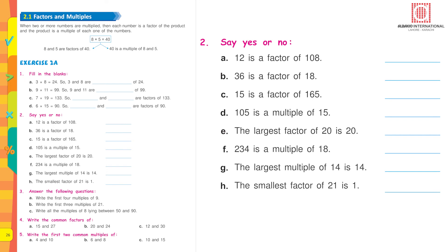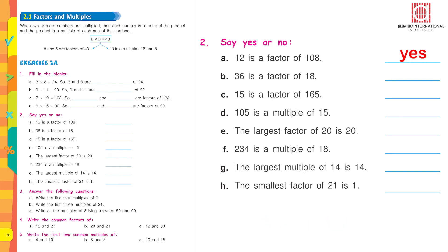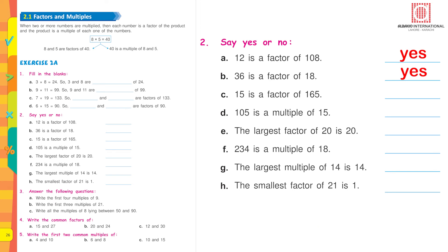Question 2 — say yes or no. Is 12 a factor of 108? Check if 12 divides 108 with remainder 0. 12 × 9 = 108, so yes. Is 36 a factor of 18? Check: 18 × 1 = 18, 18 × 2 = 36, so 36 is not a factor of 18. Is 15 a factor of 165? Try the rest of the sums yourself.